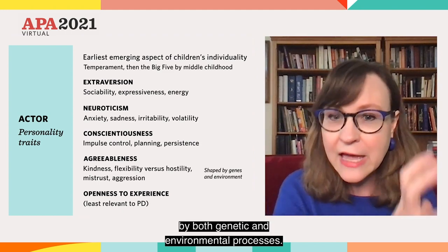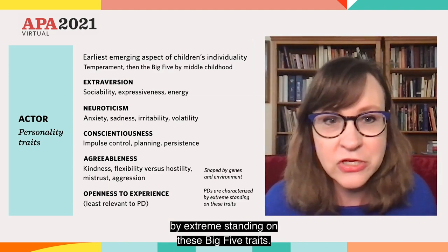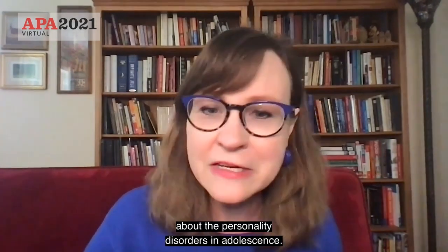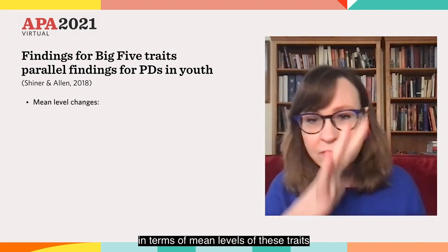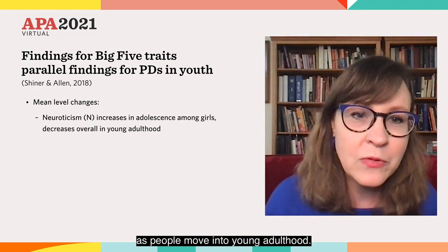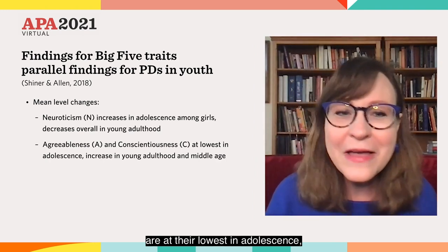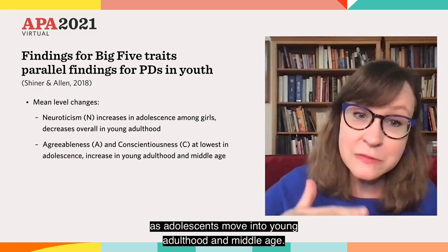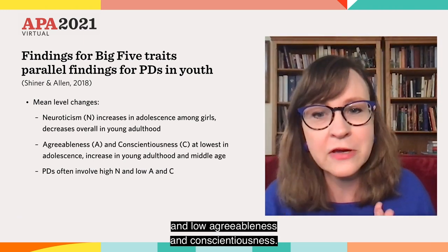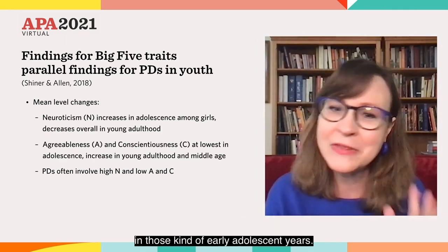We know now that personality disorders are characterized by extreme standing on these Big Five traits, and this is true for adolescents. It turns out also that the findings for these Big Five traits parallel what I discussed earlier about personality disorders in adolescents. For example, in terms of mean levels of these traits across the life course, neuroticism increases in adolescence for girls and then gradually decreases as people move into young adulthood. Agreeableness and conscientiousness — any parents of teenagers probably know this already — are at their lowest in adolescence, and then they tend to increase as adolescents move into young adulthood and middle age. Personality disorders involve a combination often of high neuroticism and low agreeableness and conscientiousness.